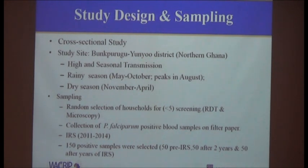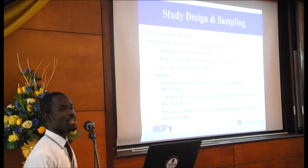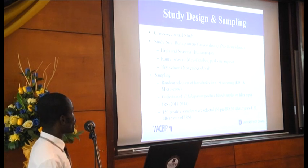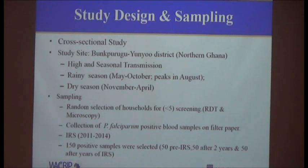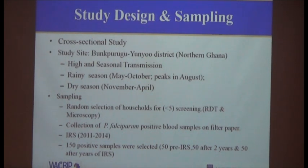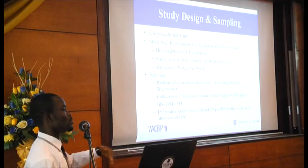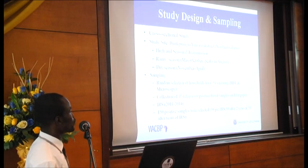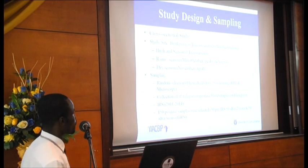The study involved random selection of households for children under five, screening using an RDT and microscopy, and the collection of P. falciparum-positive blood samples on filter paper. This was done in 2010 before the IRS was started, and repeated in every year — in 2011 before the IRS starts, and after every rainy season where they screen and take filter paper blood samples.